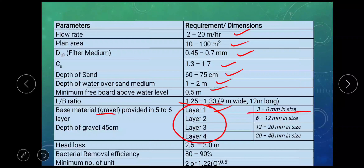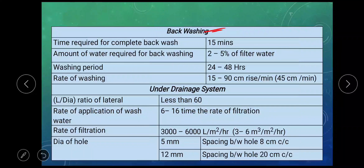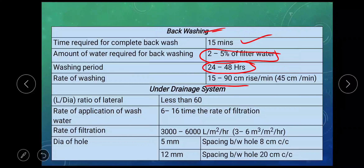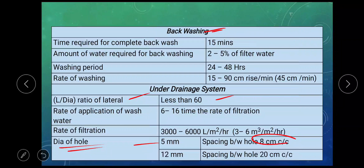In layer 1, 3 to 6 mm size of the particle may be used. In layer 3, 12 to 20 mm size of the particle may be used. In layer 4, 20 to 40 mm size of the particle may be used. The depth of the base material may vary from 45 to 50 centimeter. Head loss may vary from 2.5 to 3 meter. Bacterial removal efficiency is 80 to 90 percent. Minimum number of units can be calculated as 1.22 times Q to the power 0.5, or simply 2. Backwashing is done every 1 to 2 days for 15 minutes using 2 to 5 percent of the filter water. Rate of backwashing may vary from 15 to 90 centimeter rise per minute. For the under drainage system, length to diameter of lateral should be less than 60. Rate of application of wash water may vary from 6 to 16 times the rate of filtration. Diameter of hole in lateral may be 5 mm when spacing provided is 8 centimeter center to center.